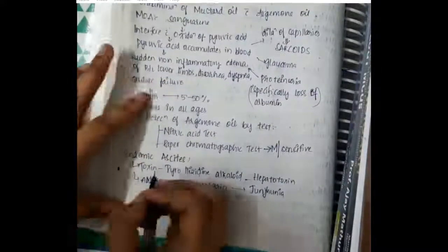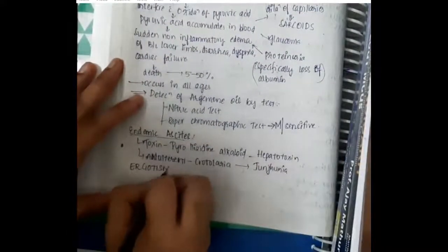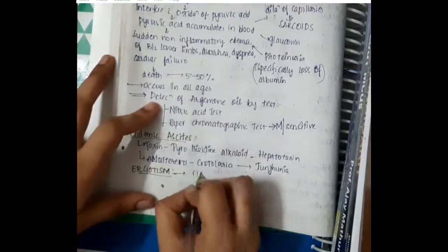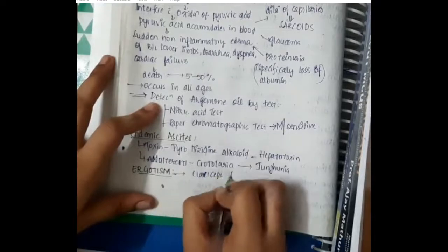Then after this, the next adulterant is ergotism. Ergotism occurs due to the claviceps fusiformis fungus.